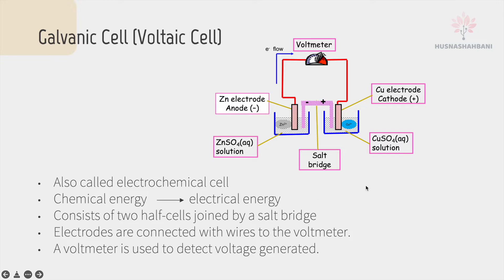The cell consists of two half cells joined by a salt bridge. The half cell on the left consists of zinc sulfate solution with a zinc electrode, and on the right, the half cell consists of copper sulfate solution with a copper electrode. These two electrodes are connected with wires to a voltmeter, which detects the voltage generated by this galvanic cell.